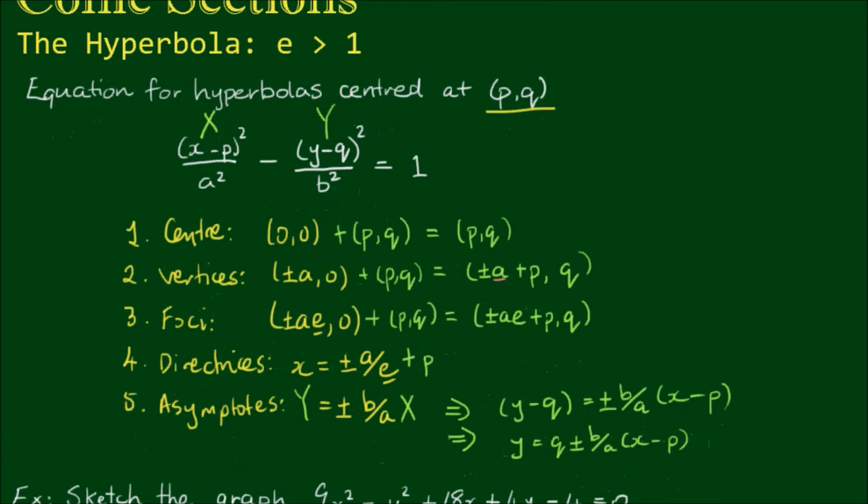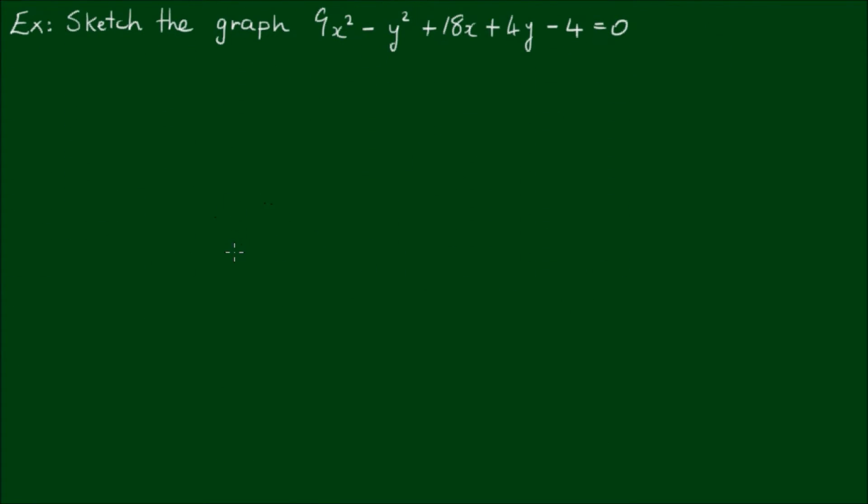Alright, so with all this, let's do an example. Sketch the graph of the equation 9x² - y² + 18x - 4y - 4 = 0. Okay, so let's first group the x terms together and factor out a 9 from those.